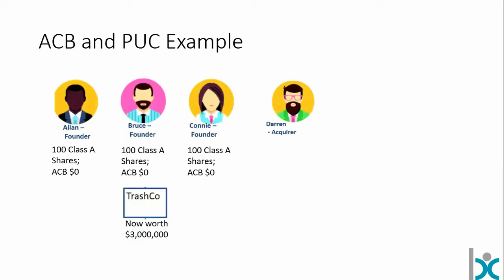To work through this, let's introduce Darren. Darren is going to buy his way into TrashCo. For simplicity, I've removed HoldCo here — there's not really a need for it in this example. We've also gotten rid of Alan's one Class C share, which has now been redeemed. We have a clean ownership stake: 33% each, 300 Class A shares. TrashCo is worth $3 million — that's entirely a matter of negotiation.